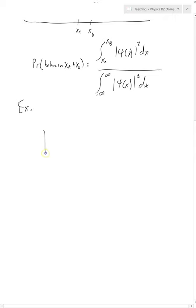I'm gonna just draw a random wave function. So this is X in this axis. This is the wave function as a function of X. And let's say we have something that looks like this. That's gonna be our wave function.